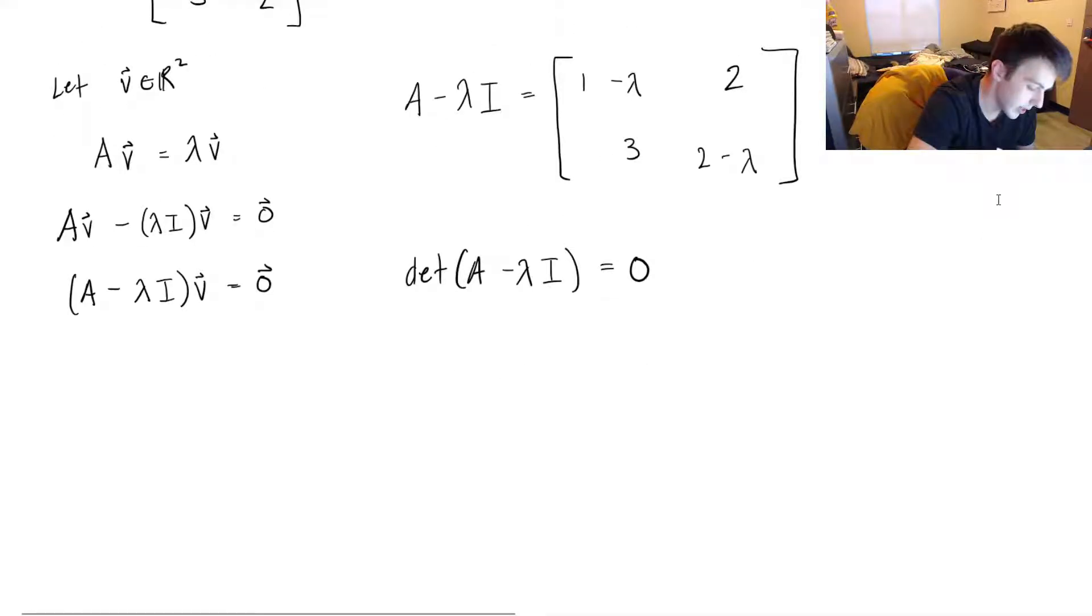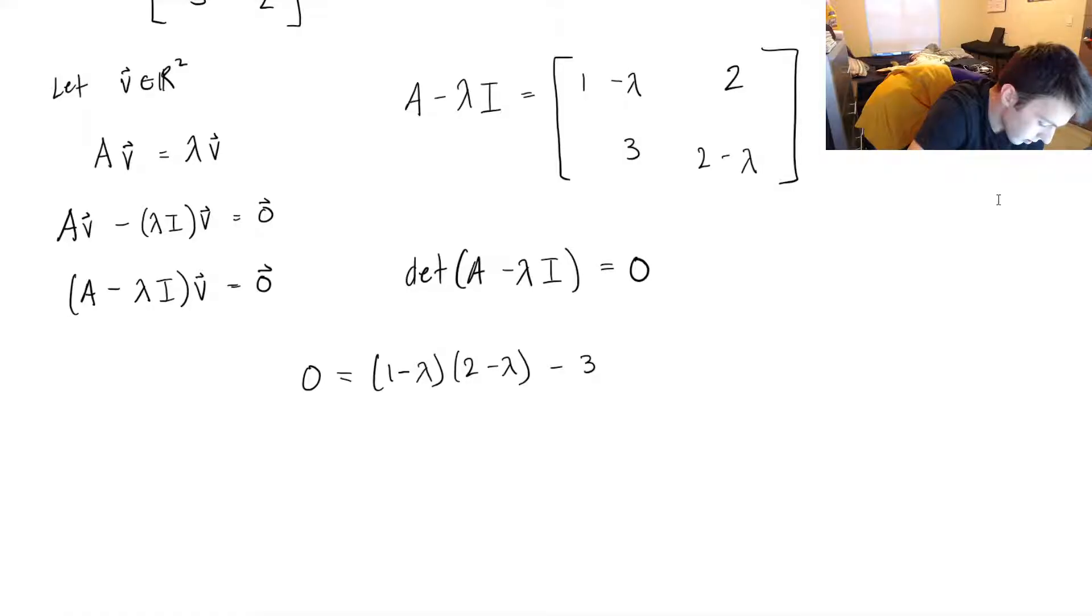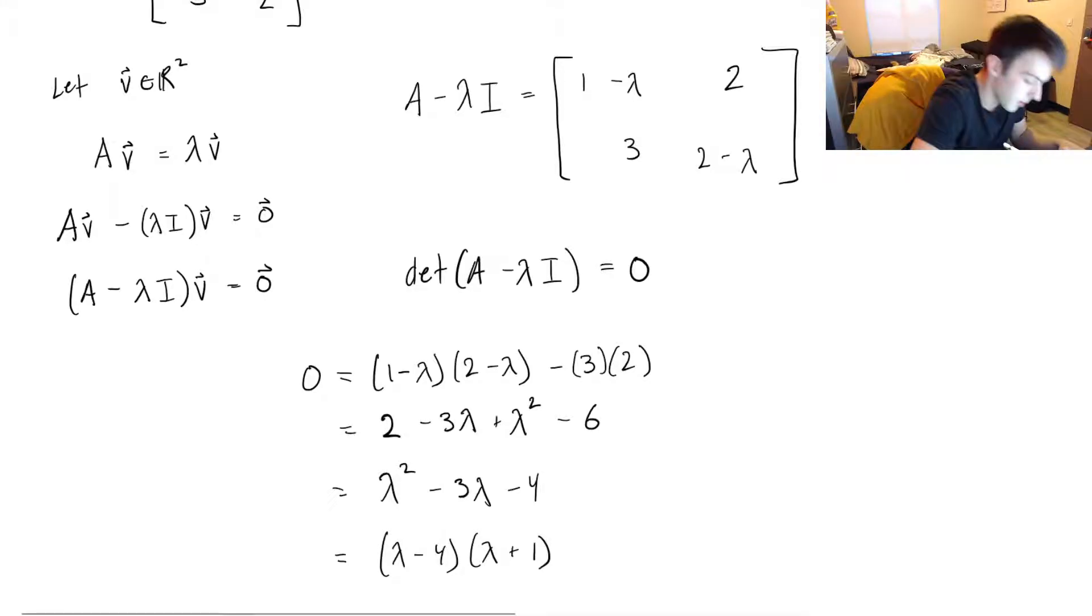So let's take the determinant. It's a 2 by 2 matrix, so it's not too hard. So I've got 0 equals (1 - λ) times (2 - λ) minus 3 times 2. So this will be 2, and then I've got minus 2λ minus λ, so this is minus 3λ plus λ² minus 6. So this will equal λ² minus 3λ minus 4. So this will be (λ - 4) and (λ + 1).